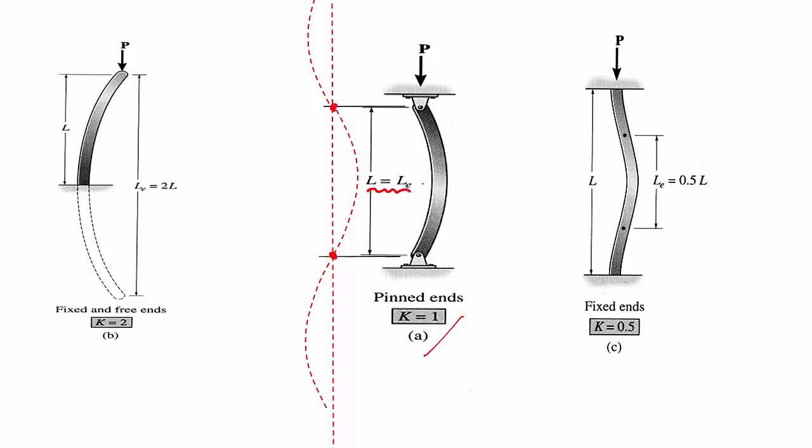Considering now our fixed-free condition, if you draw the buckled shape again this time our points of inflection occur here and here and the distance between them now is equal to our effective length and that is equal to 2L. So this time round our buckling coefficient is equal to 2.